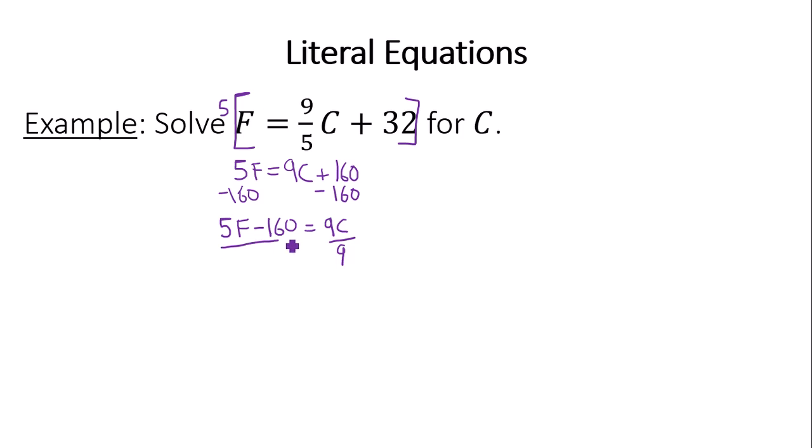So it turns out that 5F minus 160 all over 9 is equal to C. Or if you like your variable better on the left that you're solving for, C equals 5F minus 160 over 9. So this is a formula where I can plug in any Fahrenheit temperature I want, evaluate, and I can find the Celsius temperature. Always.